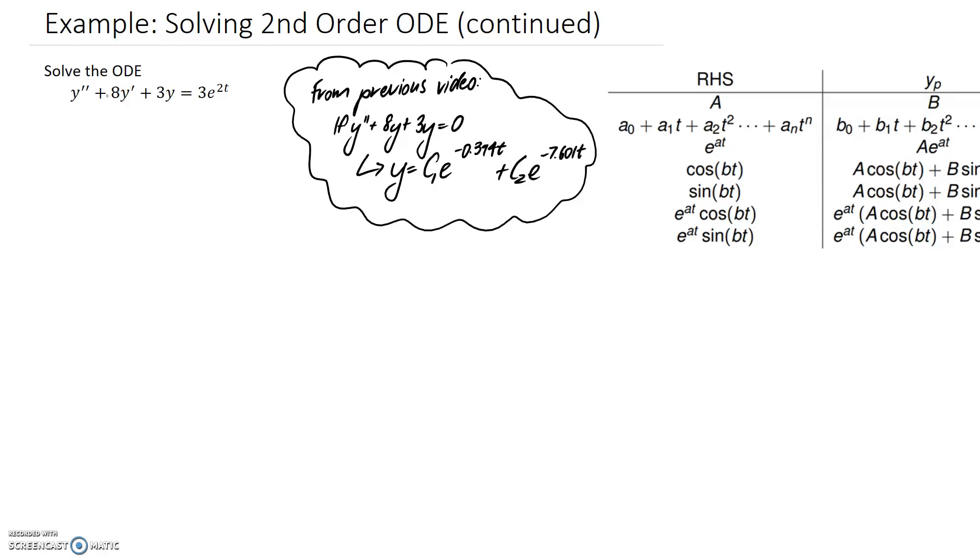So in this video, we're going to try and solve the ODE y double dash plus 8y dash plus 3y is equal to 3e to the 2t.